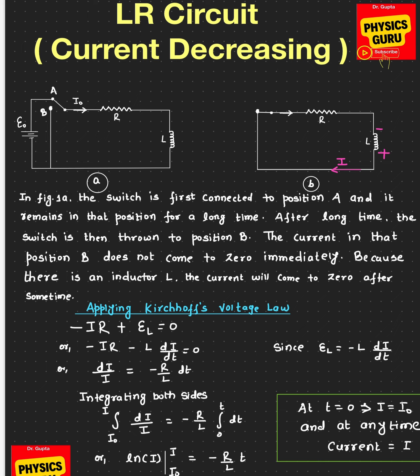In this video, we're going to talk about an LR circuit, or RL circuit, where the current is decreasing. In the last video, we talked about the LR circuit where the current was increasing — the current in the inductor was increasing. In this case, the current in the inductor is decreasing.